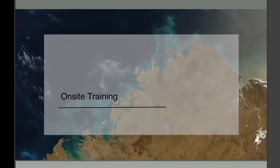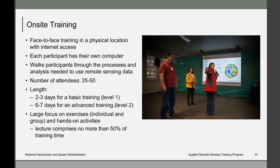Face-to-face training is held at a physical location with internet access where ideally each participant has their own computer, and the instructor walks participants through the processes and analysis needed to use remote sensing data. The ideal number of attendees is between 25 and 50 — too large and you cannot provide individualized help; too small and you cannot do group work effectively.